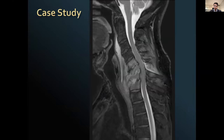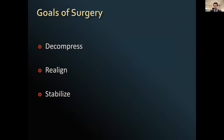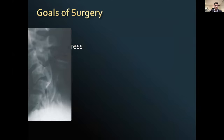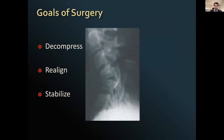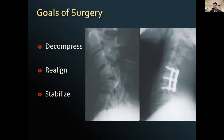Going back to our patient — what problems does he have? If we think very simply: he has severe infection, deformity of the spine, compression of the neural structures, and therefore instability. This leads us to the goals of spine surgery: decompression of compressed neural elements, realignment of the spine, and providing stability. Every spine operation we do involves achieving one of these goals or a combination of them.